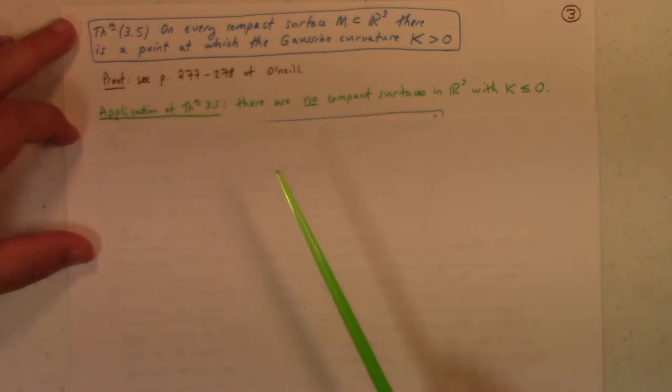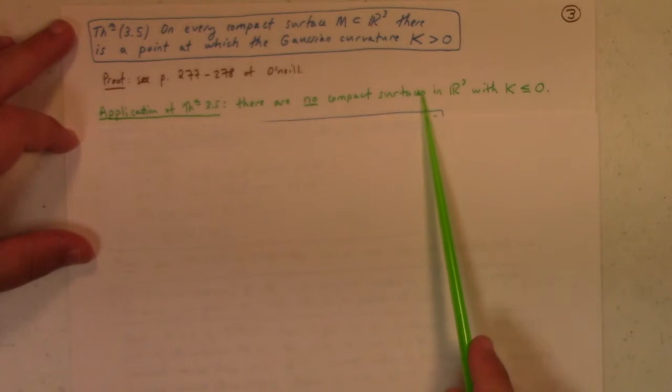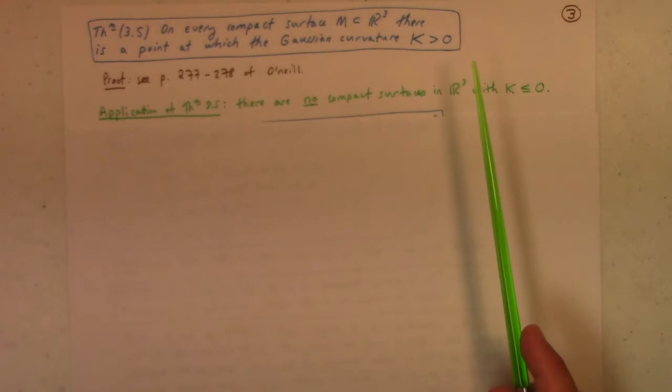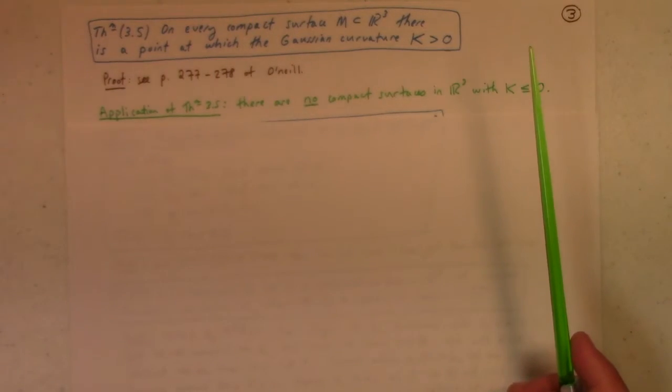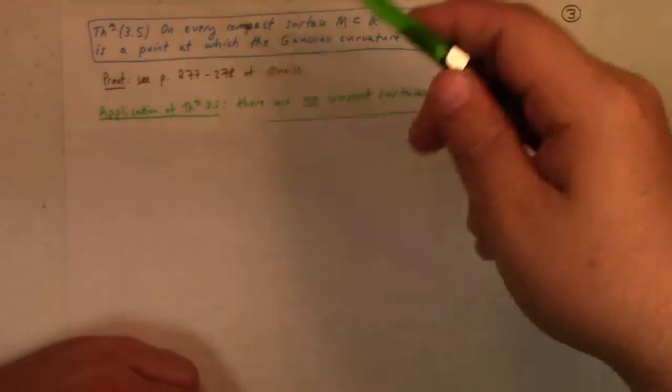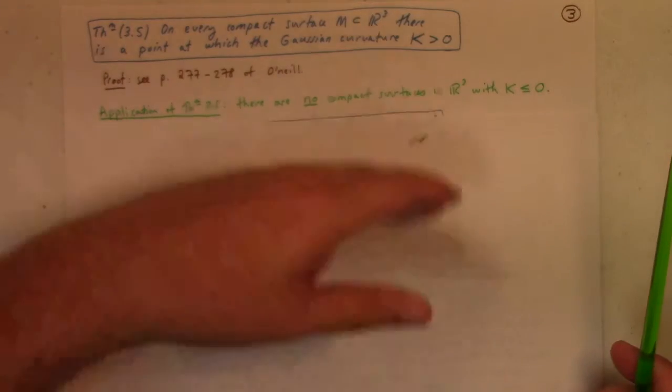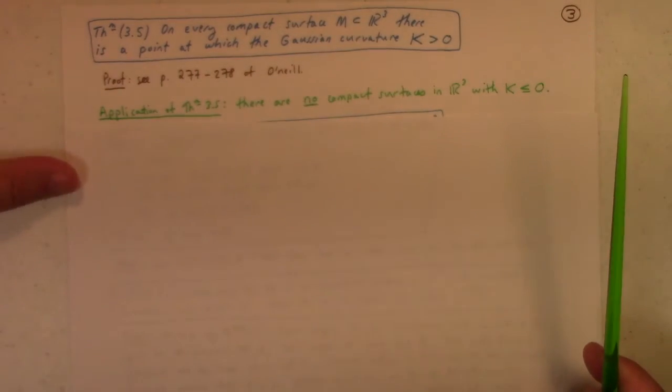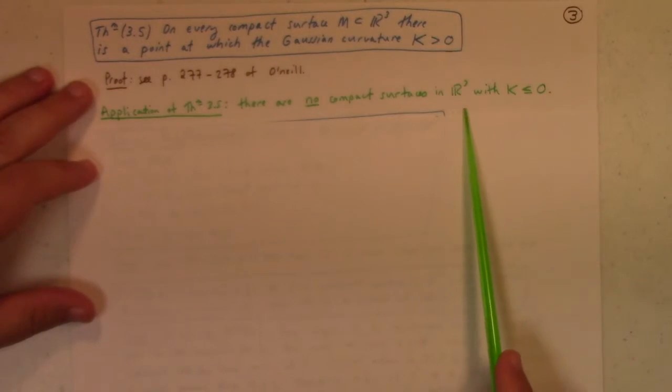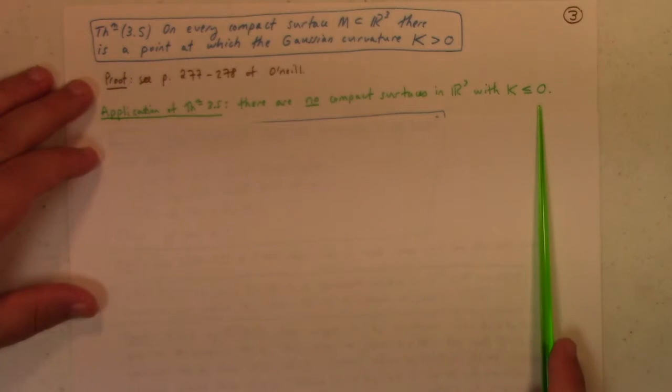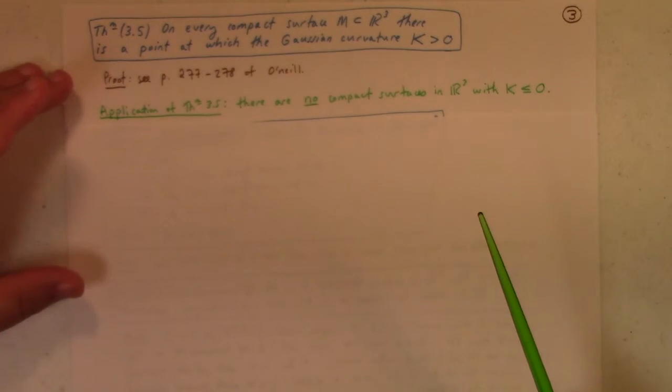An application of this theorem, though, is nice. There are no compact surfaces in... Is that a mosquito? No, it's just a moth. Go away. Shoot. We open the garage door later and let bugs in. Get out of here. Let's get out of here. Sorry, I'm distracted a little bit here. All right. There are no compact surfaces in R3 with Gaussian curvature non-positive. There has to be some point where the Gaussian curvature is positive if it's a compact surface.